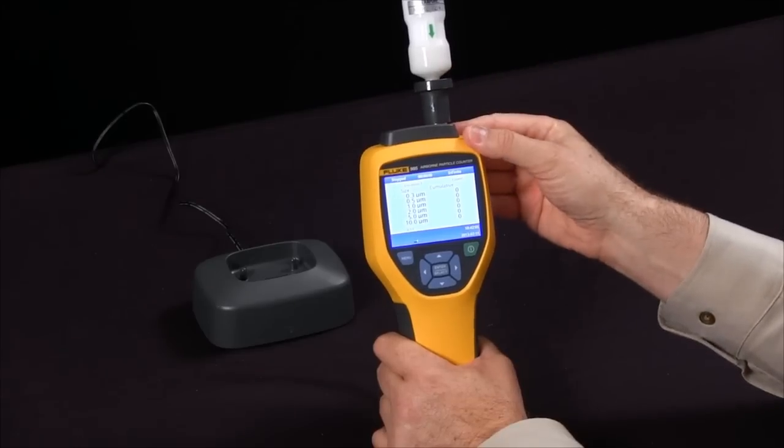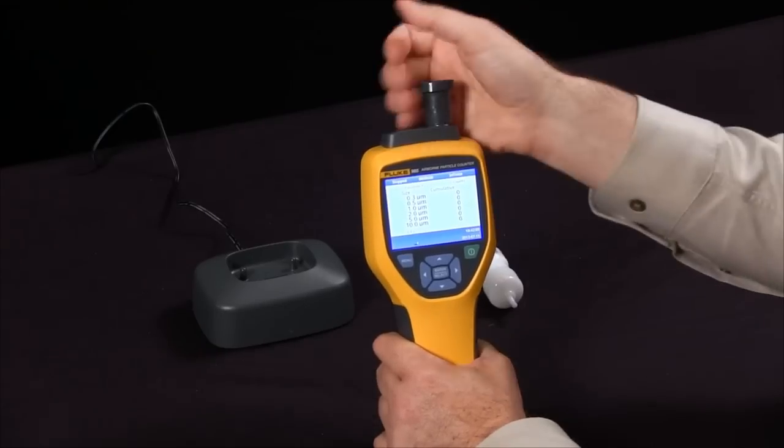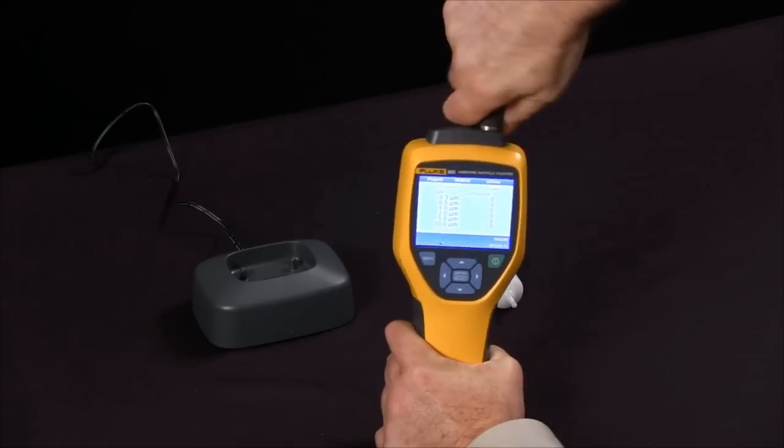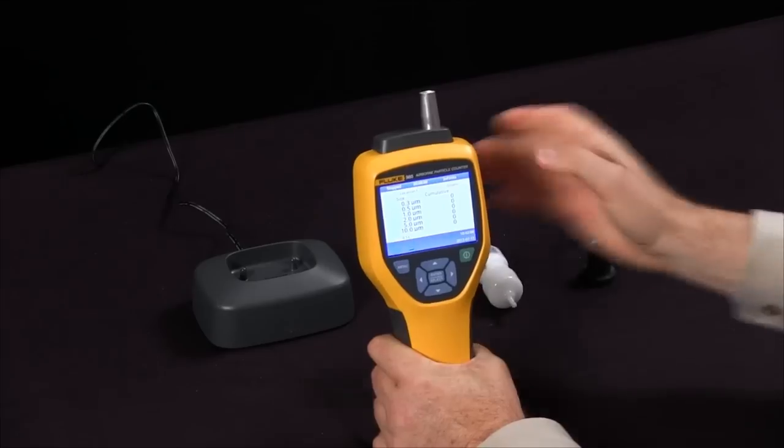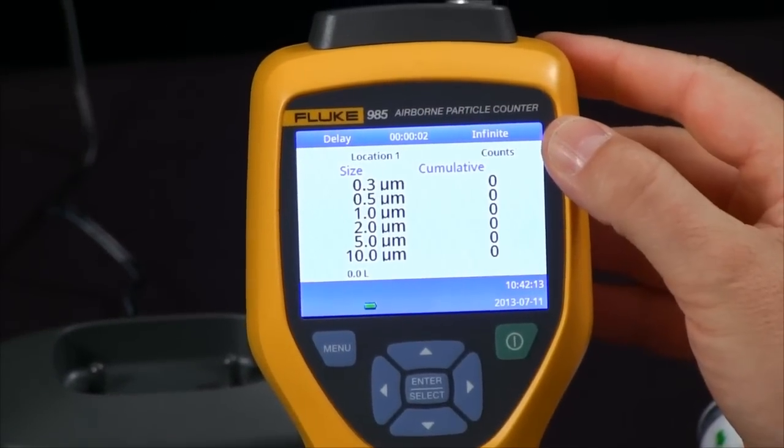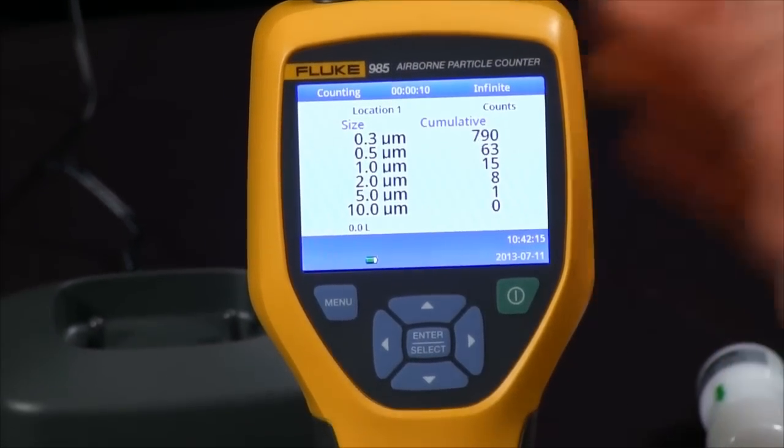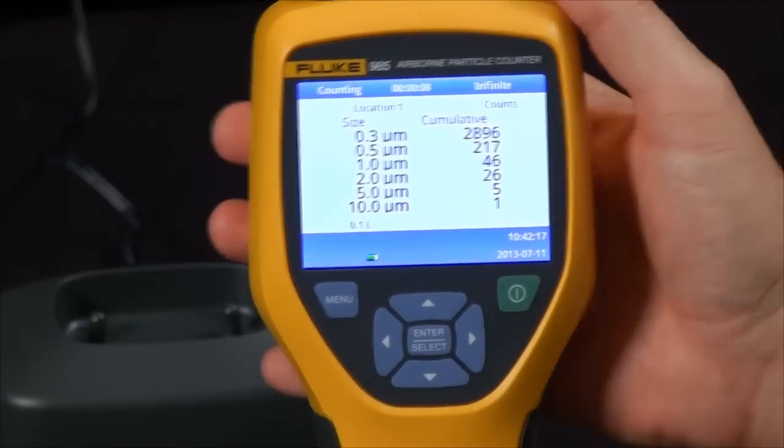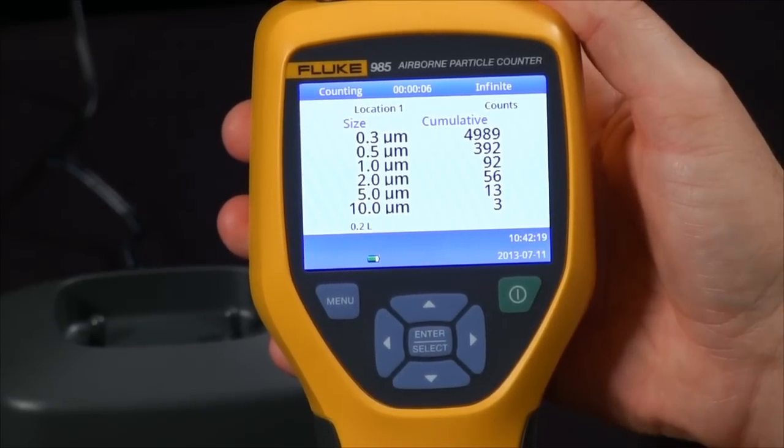Now we're ready to take a sample. Simply take off the zero pass filter and the adapter, and then we can start our reading. Simply press the sample button again, and you will see that our particle count is accumulating according to what we have in the air.